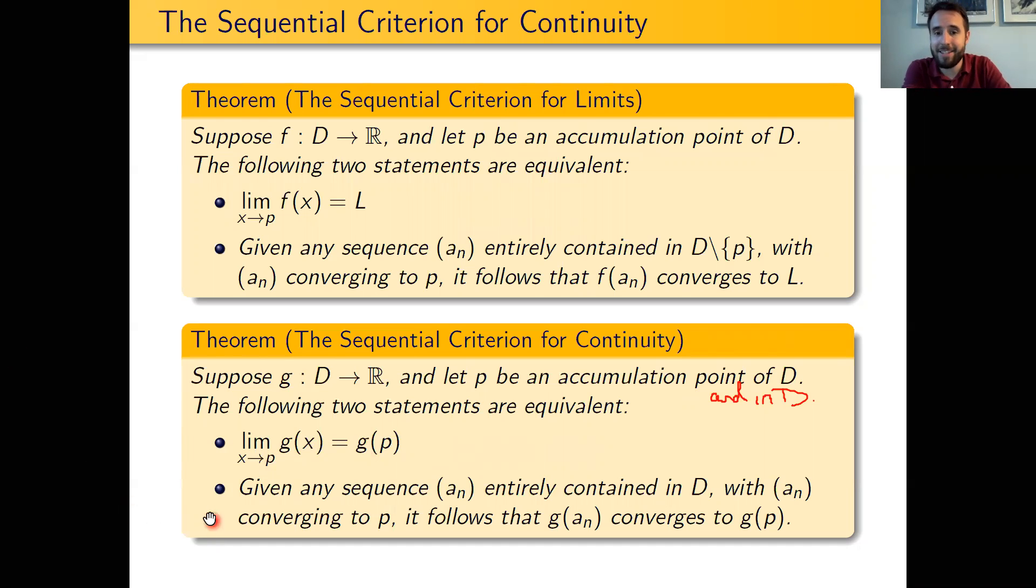Second, given any sequence a sub n entirely contained within the domain, as long as a sub n converges to P, it will follow that G of a sub n, a sequence in the codomain, will converge to G of P.